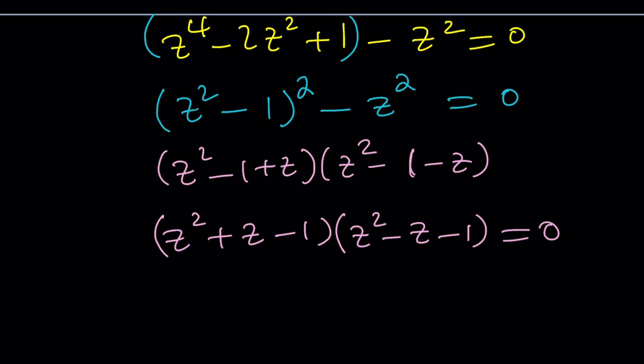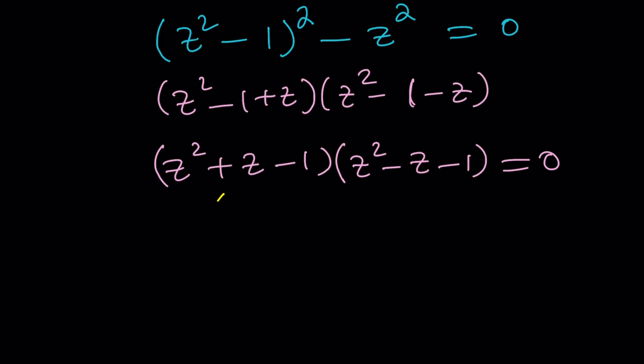Obviously these are each quadratic equations and we can solve them by using the quadratic formula easily. From here we're going to get the following z values: z equals negative 1 plus minus root 5 over 2, and z equals 1 plus minus root 5 over 2.